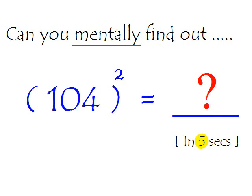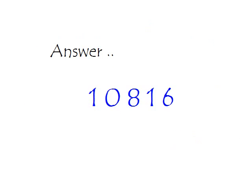Your time is up. The correct answer is 10,816 — there it is: 1-0-8-1-6. Now let me show you the easy calculation trick for finding squares of numbers the faster way.